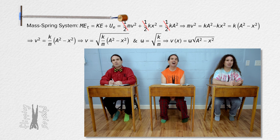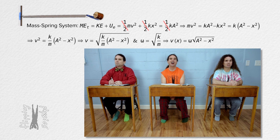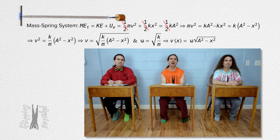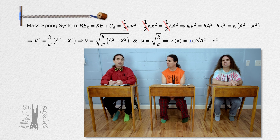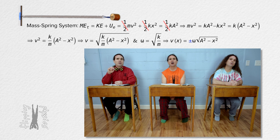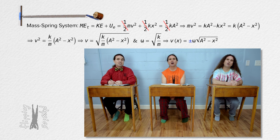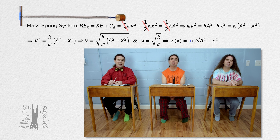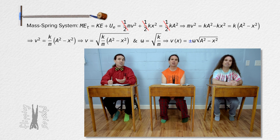Which means the velocity of a mass-spring system as a function of position equals angular frequency times the square root of the quantity amplitude squared minus distance from equilibrium position squared. We need to be careful to add plus or minus to the velocity equation, because otherwise we might not remember that the velocity of the mass-spring system is negative when it is moving to the left, and any time you take the square root the answer could be positive or negative.